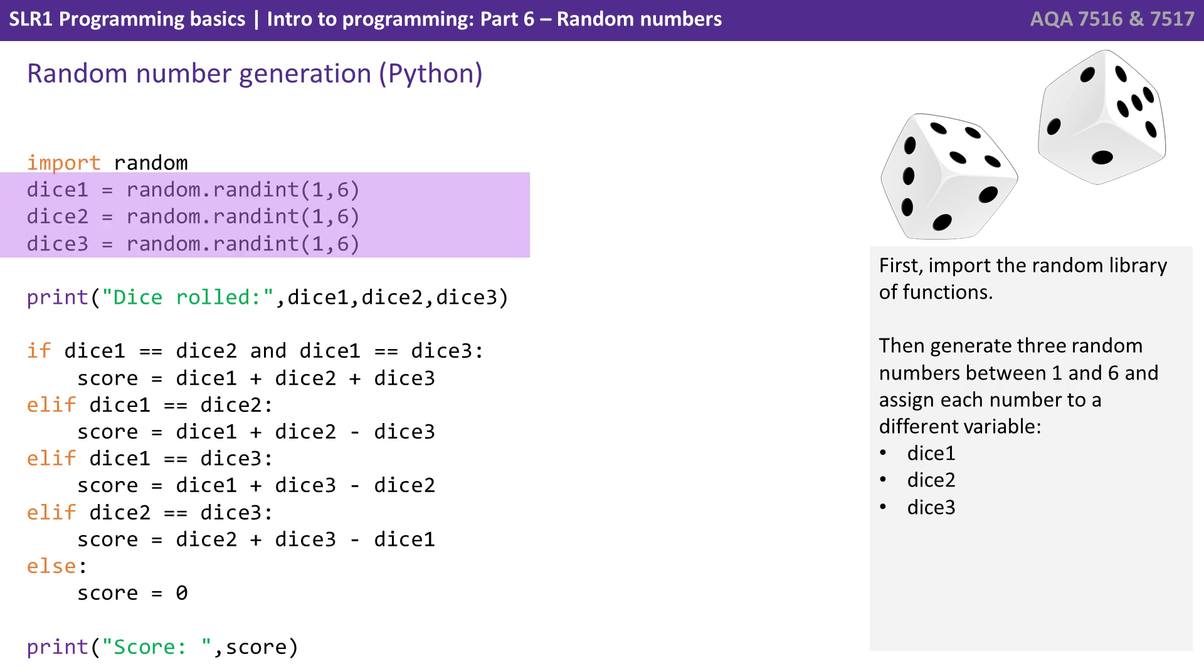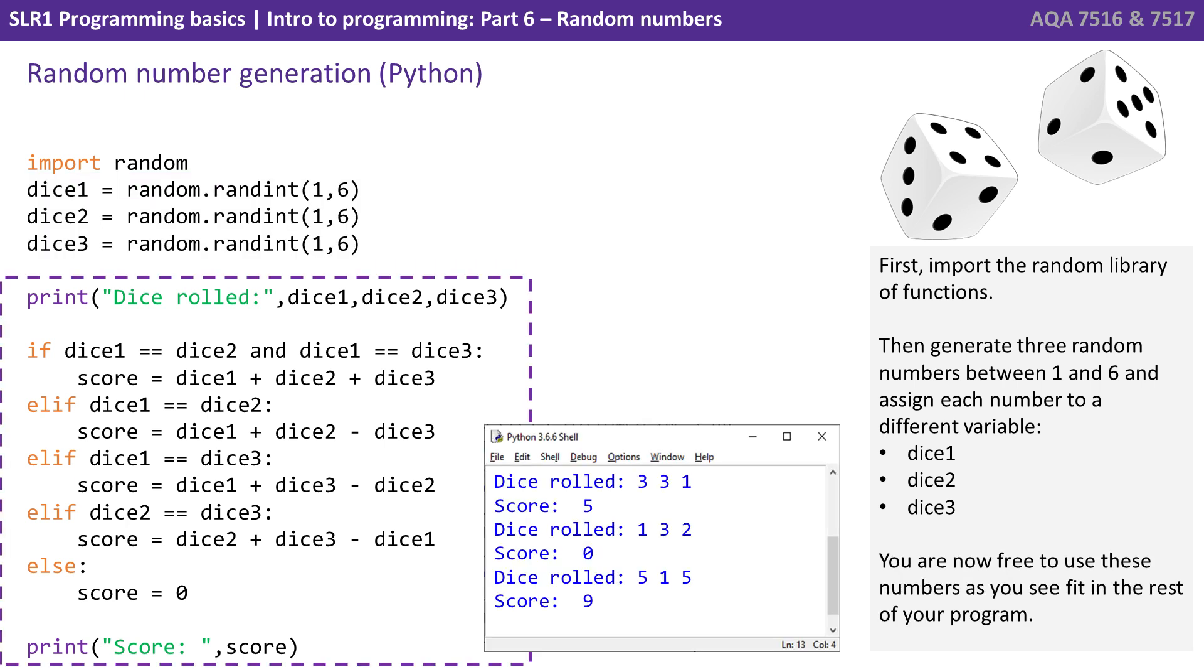We then generate three random numbers between one and six and assign each number to a different variable. In this case, dice one, dice two and dice three. You're now free to use those numbers as you see fit in the rest of the program.